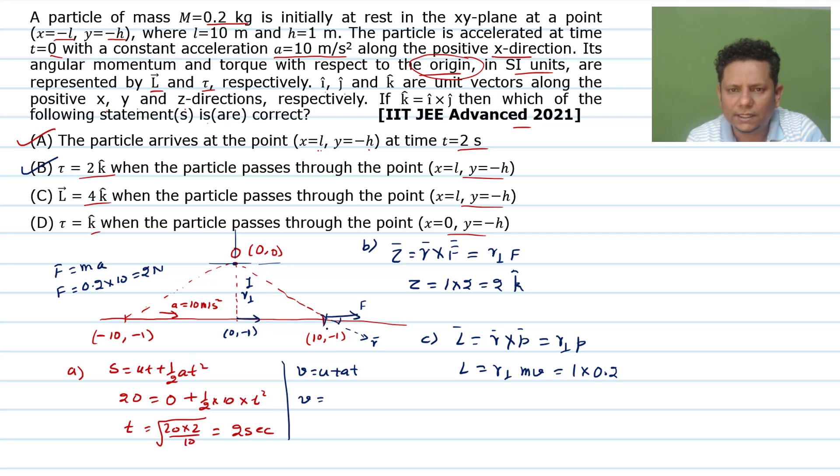Let's calculate v value using v = u + at. When v reaches here, the time is 2 seconds, so v = 0 + 10×2 = 20 m/s. Inserting this, L = 1×0.2×20 = 4, and the direction is k cap. So option C is also correct.